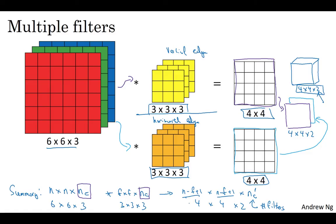This idea of convolution on volumes turns out to be really powerful. Only a small part of it is that you can now operate directly on RGB images with three channels. Even more important is that you can now detect two features, or 10, or 128, or several hundred different features simultaneously — and the output will have a number of channels equal to the number of features you're detecting. As a note on notation, the last dimension is sometimes called the depth of the 3D volume, but I'll use the term channels in these videos to avoid confusion with the depth of a neural network.